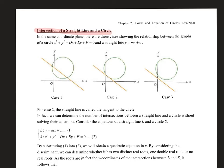The first case is there are two points of intersection where a line cuts across the circle at two distinct points. The other case is the line and the circle touch at one point. This particular line touching the circle is called the tangent to the circle.